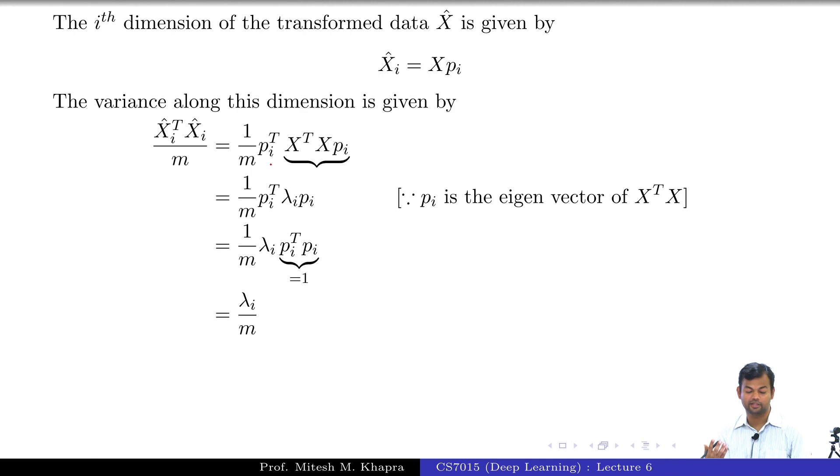So what is actually the variance along the i-th dimension? Lambda i. What is lambda i? So what will happen if I retain the highest eigenvalues? Highest variance. Is that fine? So all roads lead to eigenvectors, eigenvalues.